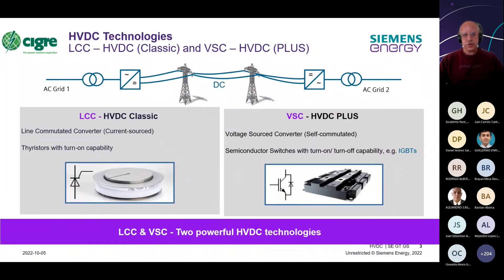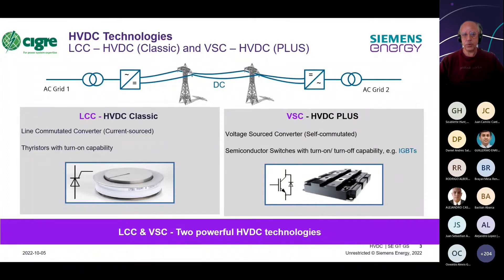In an HVDC converter system, there are two converter stations. The sending-end station is connected to a generating network, and power is transmitted via an overhead line, submarine cable, or underground cable. The receiving station then converts from DC back to AC and feeds power into the load centers.